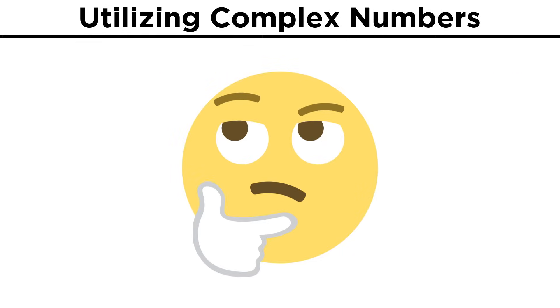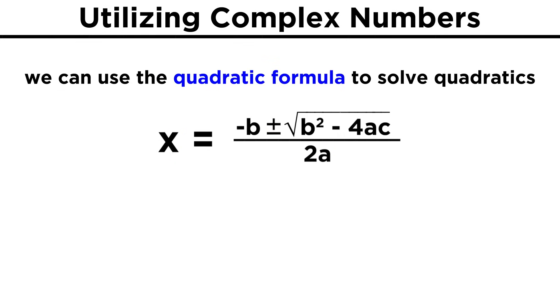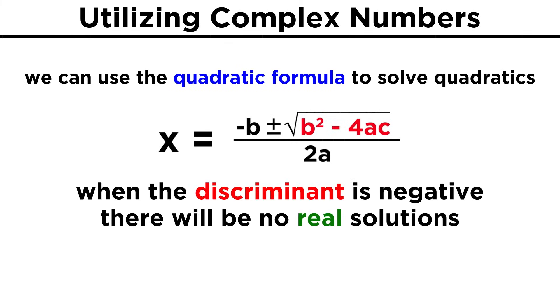Where might we see complex numbers? Well, remember when we were finding solutions to polynomials, we would sometimes use the quadratic formula. But if the number under the radical, or the discriminant, turned out to be negative, we said that there were no solutions. Well in truth, there were no real solutions.